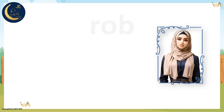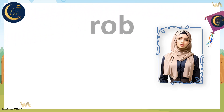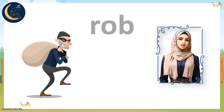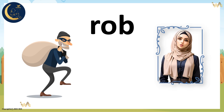Can you read this word? Excellent! This word is Rob. It has three sounds: R, ah, b. Consonant, vowel, consonant. Rob has the short sound of the vowel O.